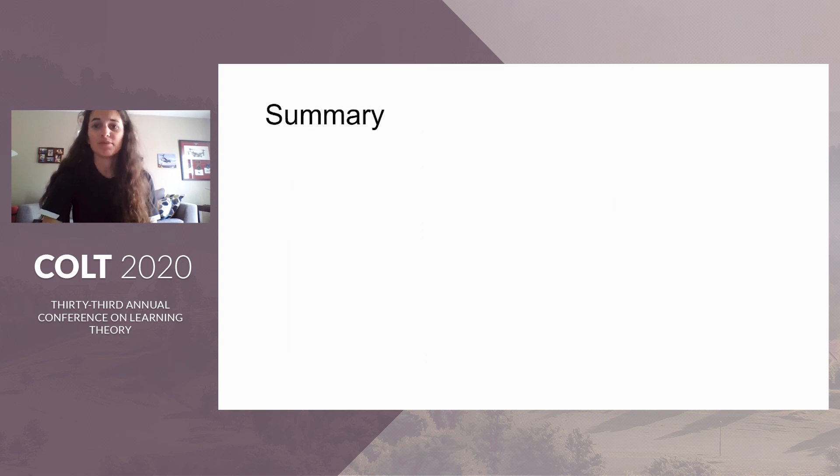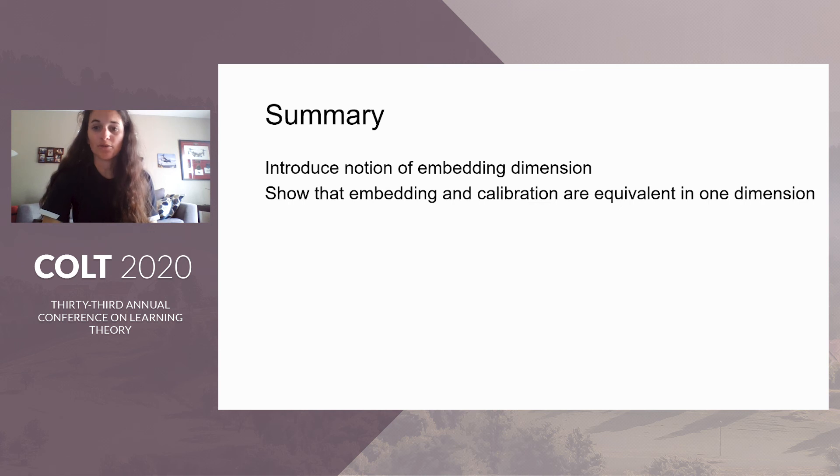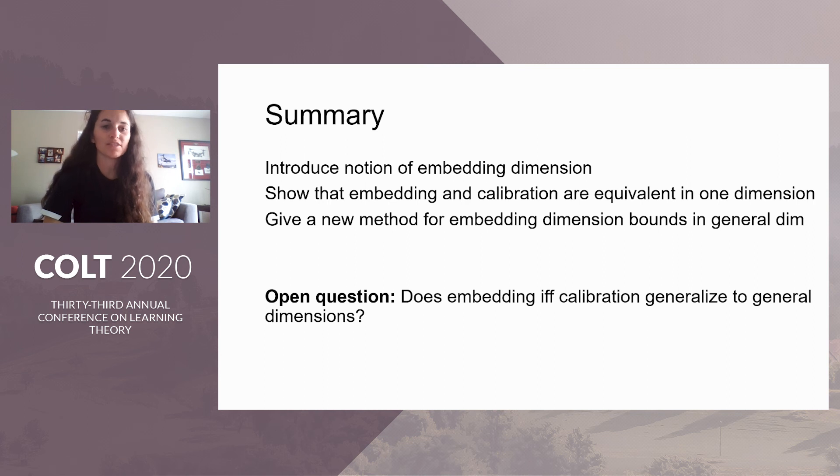In summary, this paper gives three primary contributions. First, we introduce a notion of embedding dimension. Second, we show a full characterization of one embeddability, namely that embedding and calibration are equivalent in one dimension. And third, we give a new method for understanding embedding dimension bounds in general dimensions. The primary open question that we have from this paper is that in one dimension, we have this embedding if and only if calibration condition. And the question is, does this generalize to general dimensions or higher dimensions?